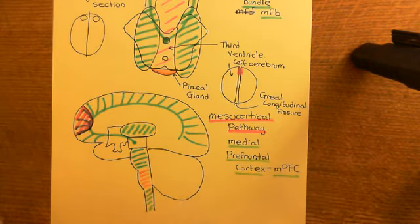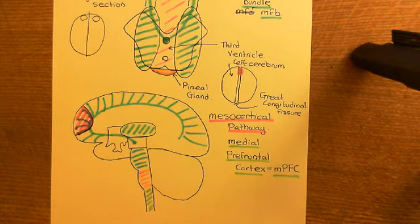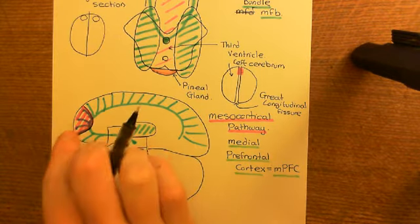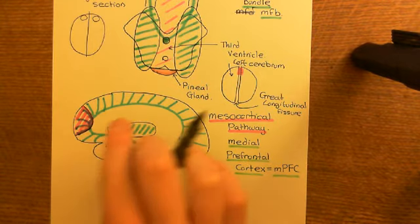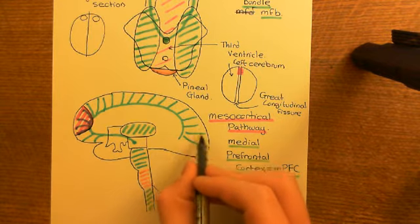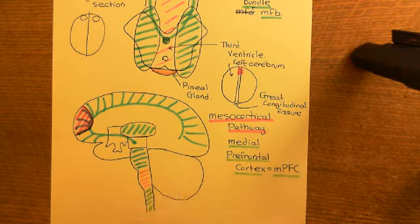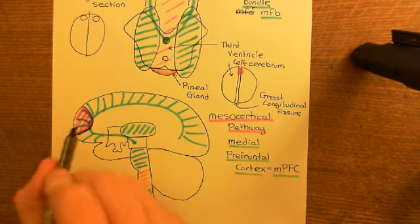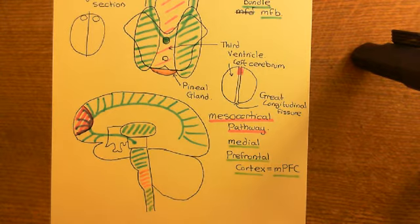The mesolimbic pathway is totally involved in the natural reward system as well, but it's this specific portion of the mesocortical pathway — to the medial prefrontal cortex — that's involved in drug addiction. Dopamine projections to the occipital lobe, for instance, aren't believed to be important in the natural reward system. It's the mPFC connections and the mesolimbic connections that are going to be extremely important.